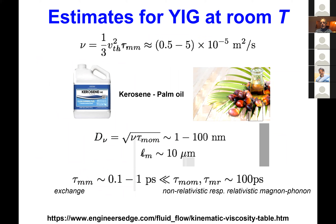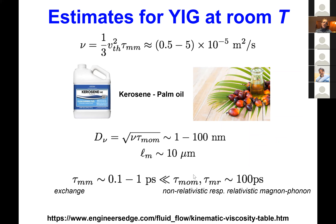Most importantly, the non-local signal as a function of distance between injector and detector shows an exponential decay at large distances — consistent with experiment — but as the injector and detector become close enough relative to the momentum relaxation length, there is a sign change of the non-local resistance. This is entirely analogous to the electronic system. The sign change turns out to be very robust and does not strongly depend on the value of the slip length.